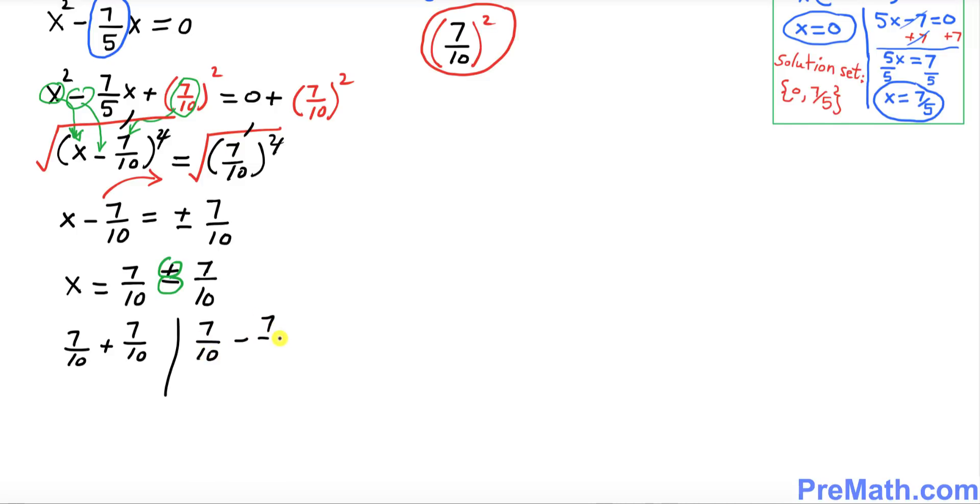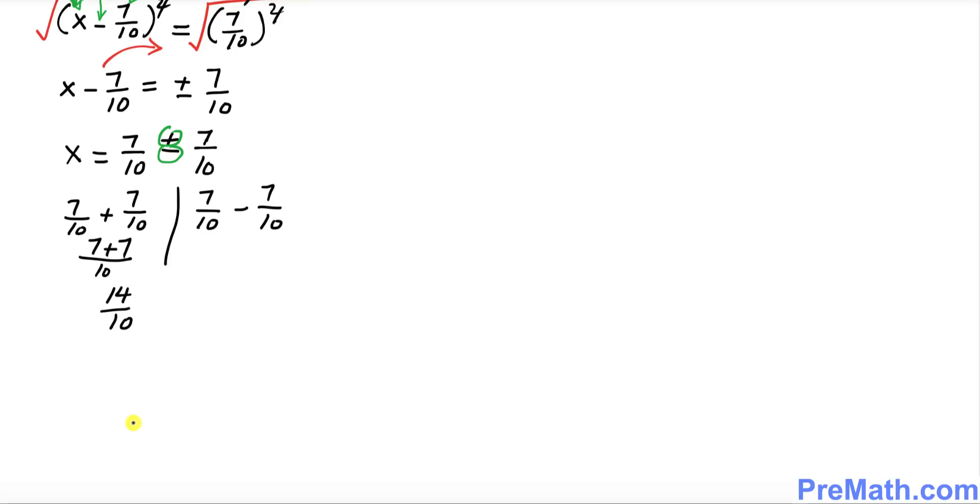If you add this thing, 10 is our common denominator. 7 plus 7 equals 14 over 10. So our x turns out to be equal to 7/5 as one of our solution.